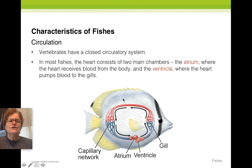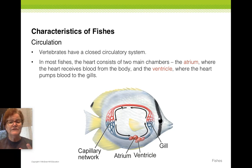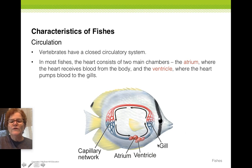Look at the circulatory system. Notice most of all how this circulatory system is different from the circulatory system of the amphibian, which we're going to look at later, and also how it is different from yours. We'll notice that you've got deoxygenated blood coming into the heart and deoxygenated blood coming out — it doesn't pick up oxygen until it passes through the gills. This is a one-way loop where we have an atrium and a ventricle.